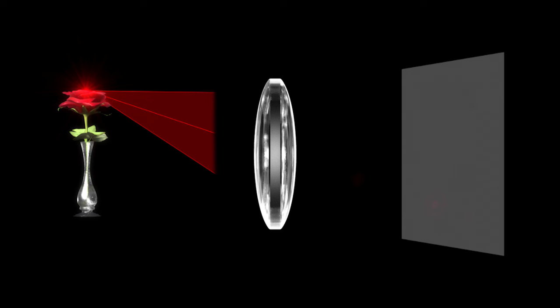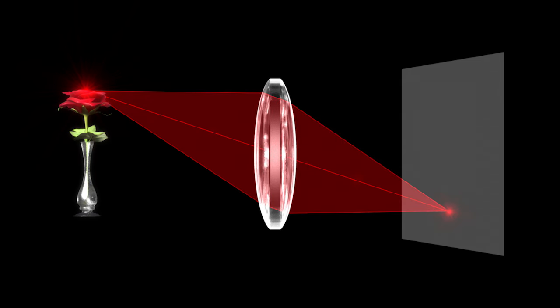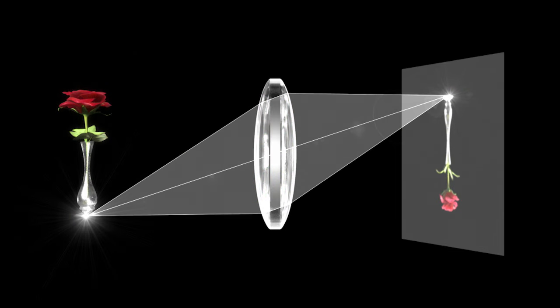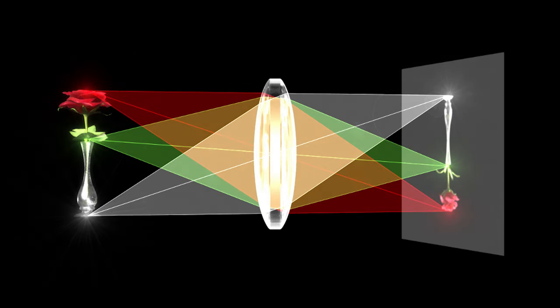When light rays pass through the lens, they refract and converge to a single point to produce an image. Because the image passes through the lens to the opposite side, it is projected upside down.